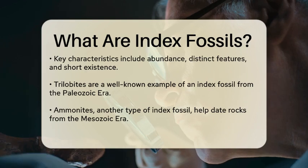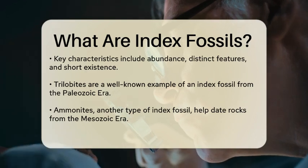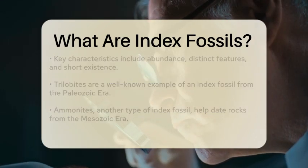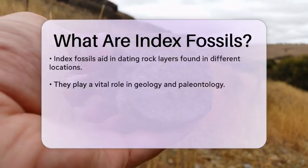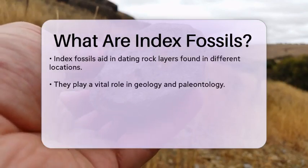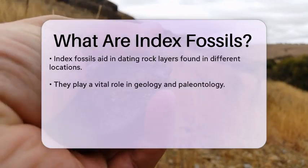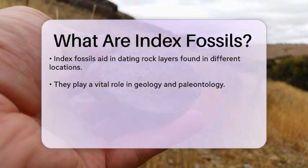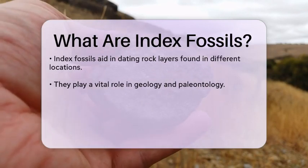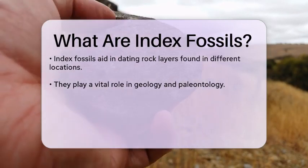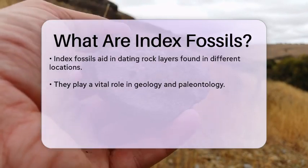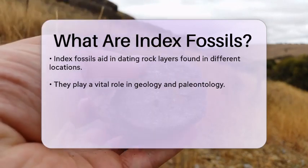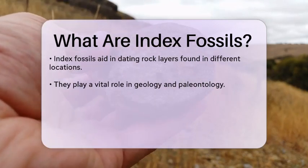For example, the trilobite is a well-known index fossil. This marine creature thrived during the Paleozoic era, and its presence in rock layers can help geologists determine the age of those layers. Similarly, the ammonite, a type of mollusk, serves as another index fossil, helping to date sedimentary rock formations from the Mesozoic era.